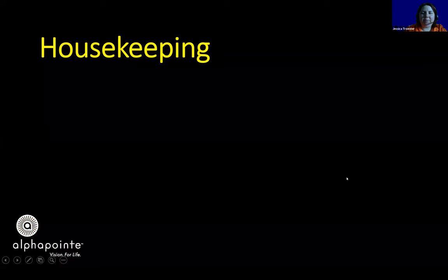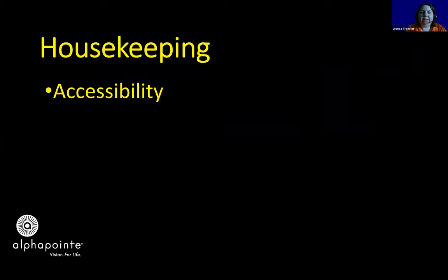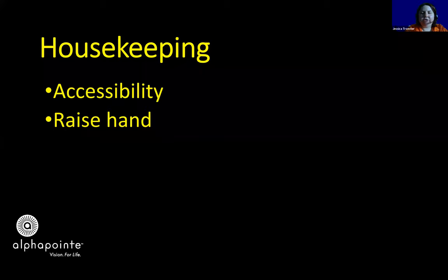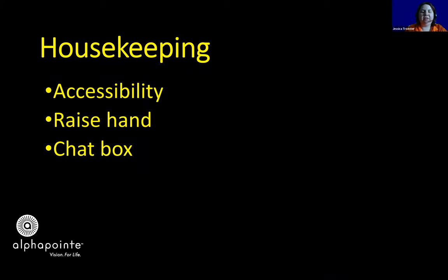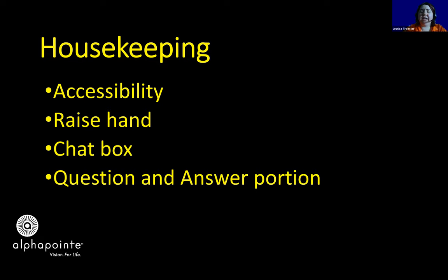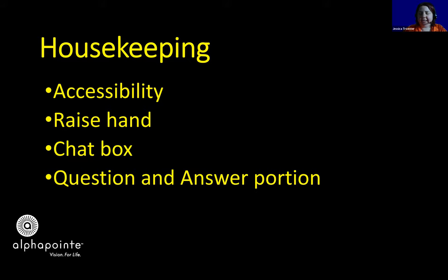A little bit of housekeeping before we begin. This presentation is designed with accessibility in mind. If you have no vision, we will be describing slides. For those with low vision, the slides are a black background with large yellow font. If you are using color inversion software, you may have to turn it off. The key command in ZoomText for this is caps lock C. Across the top or bottom of your screen is a control bar where you can raise your hand, type into the chat box, or type a question for the Q&A portion at the end.